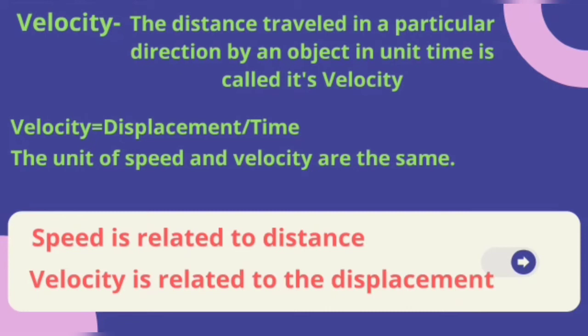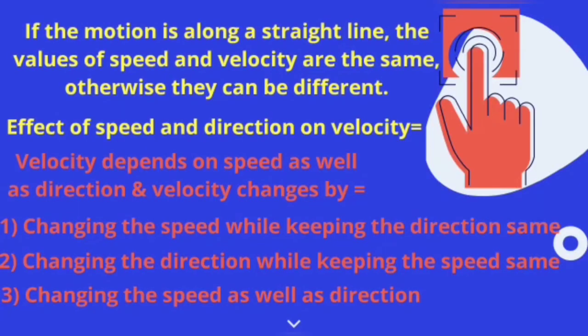Velocity. The distance traveled in a particular direction by an object in unit time is called its velocity. Velocity is equal to displacement divided by time. The unit of speed and velocity are the same. Speed is related to distance. Velocity is related to displacement.